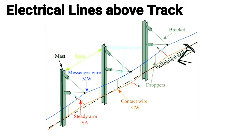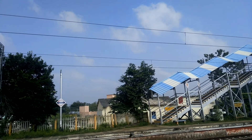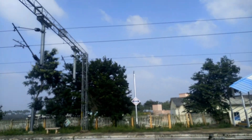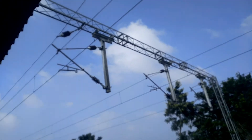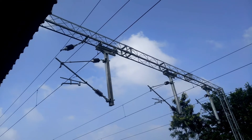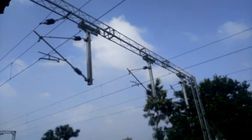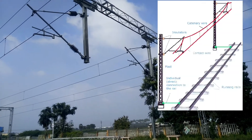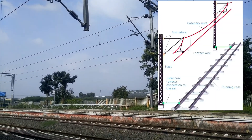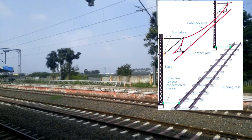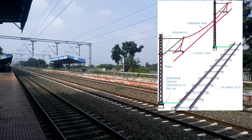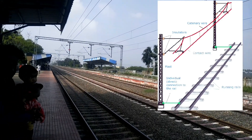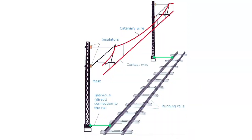There are three wires running above the rail track: the earthing wire, the catenary wire, and the contact wire. The contact wire is also called the conducting wire. The earthing wire protects the conducting wire from lightning. The catenary wire carries the current required to run the locomotive.